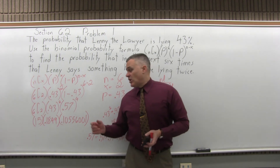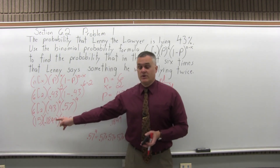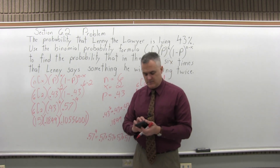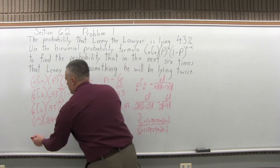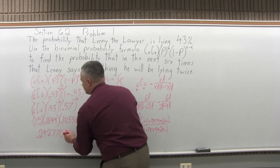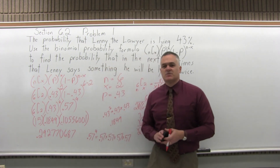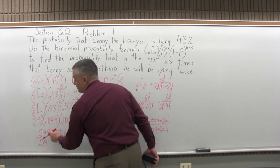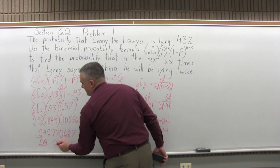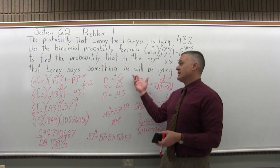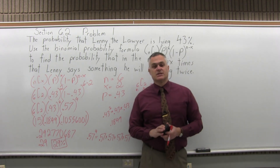To finish the problem, I'm going to multiply 15 times 0.1849 times 0.10556001, and that's going to be my answer. When I multiply that out, the calculator tells me that is 0.292770687. I don't need that many decimals — we can call it 0.29, or 0.293 if you want. It's about a 29% probability that if this person who lies a lot tells you six different things, two out of those six will be a lie.